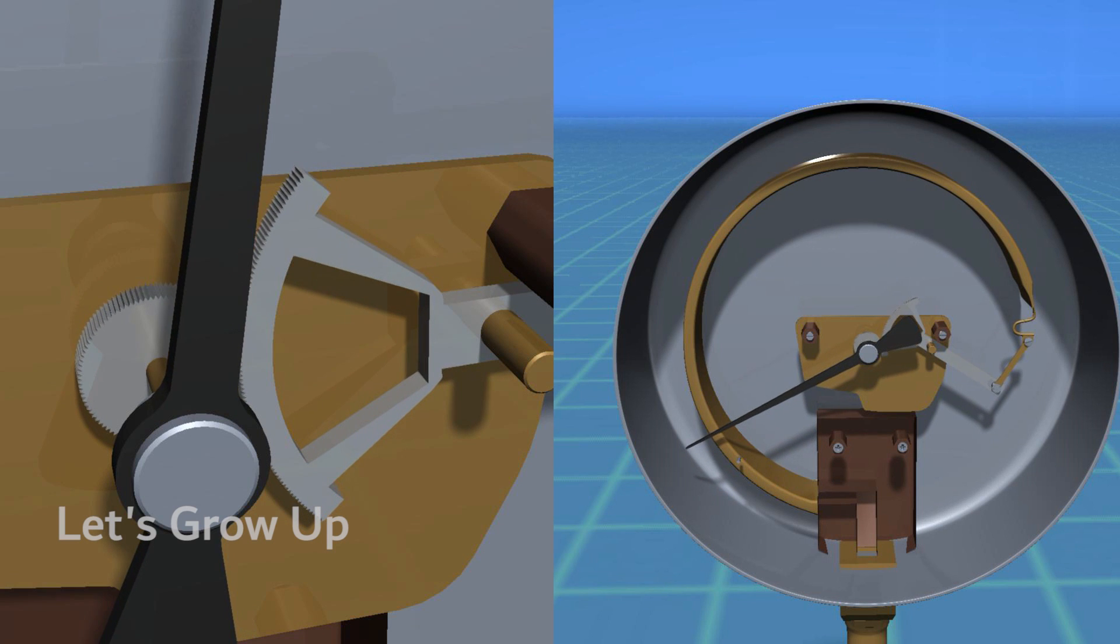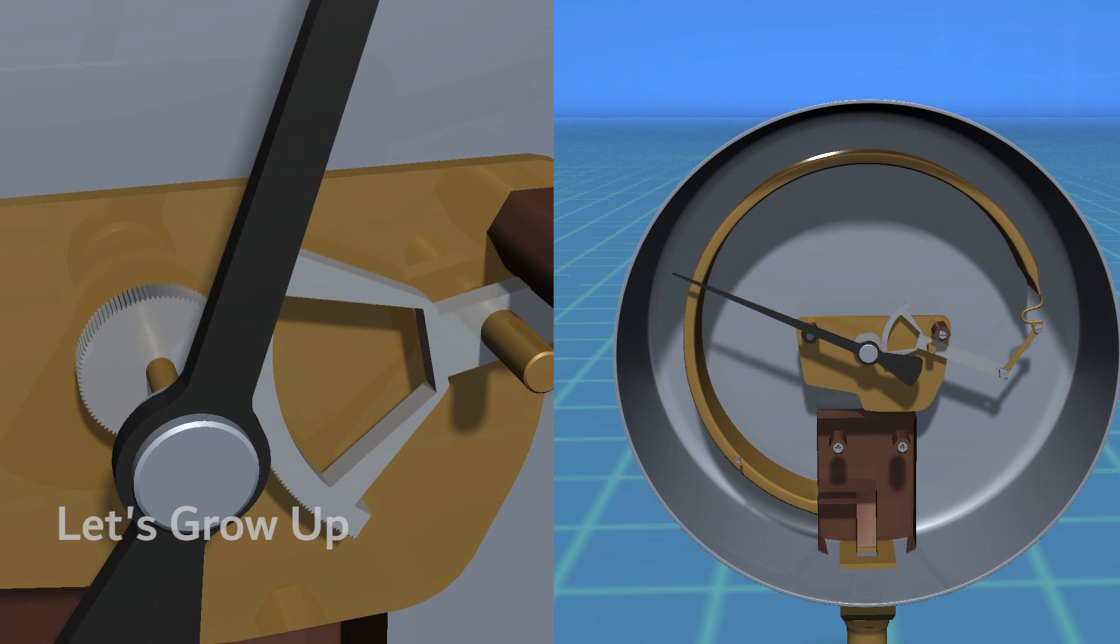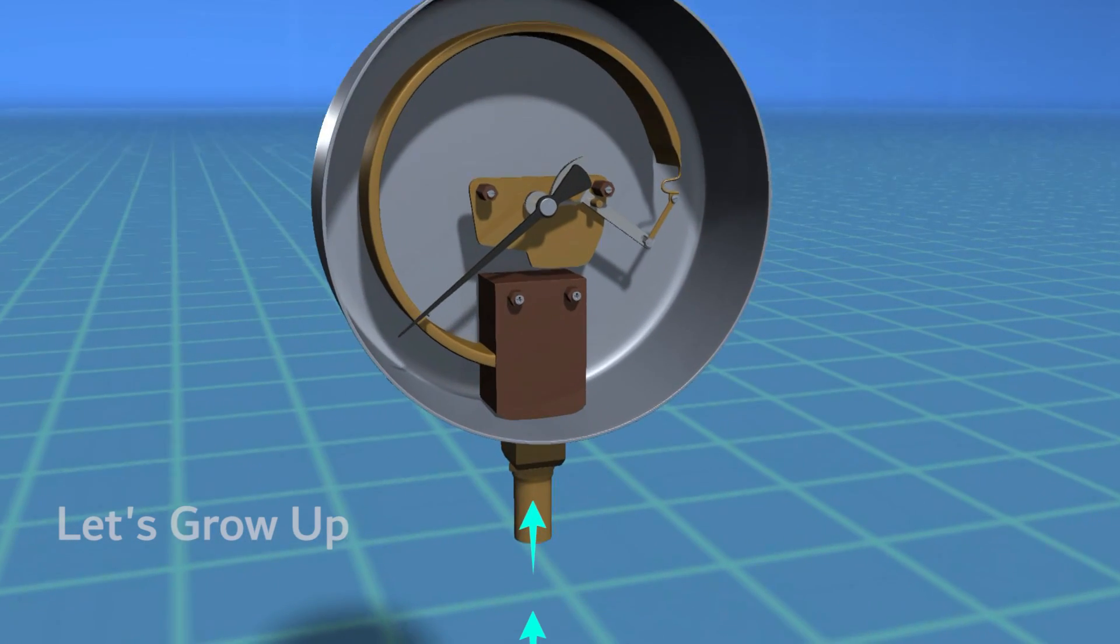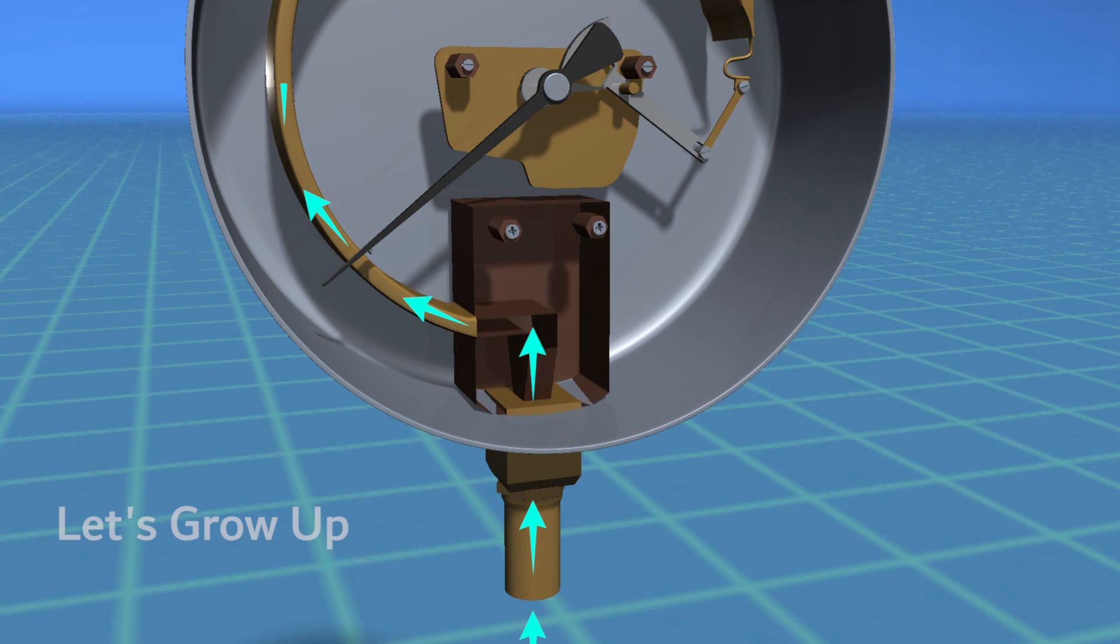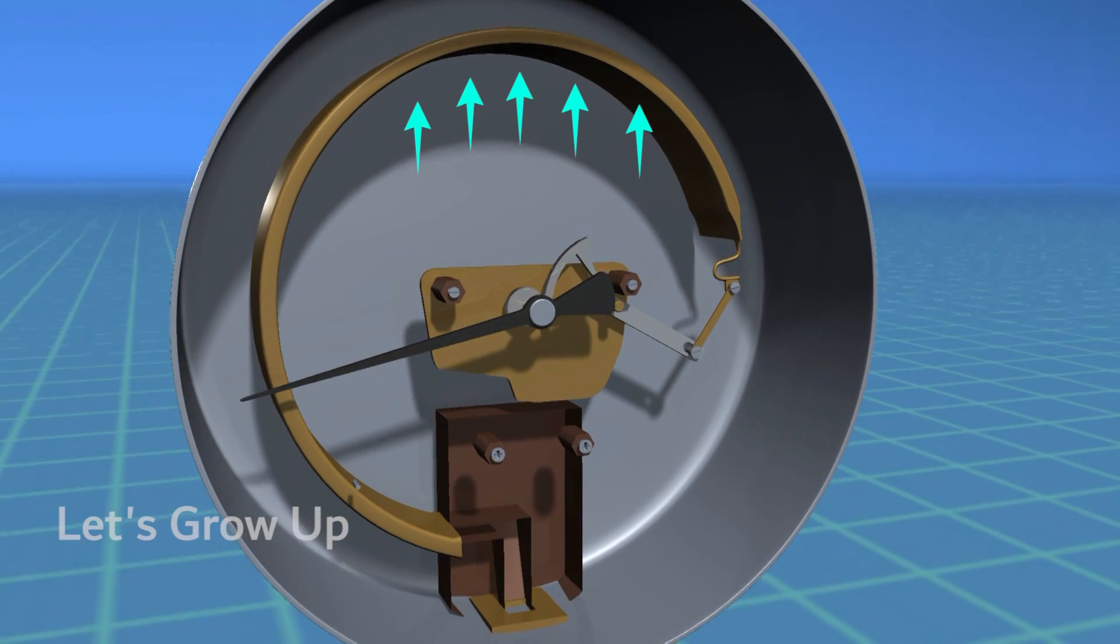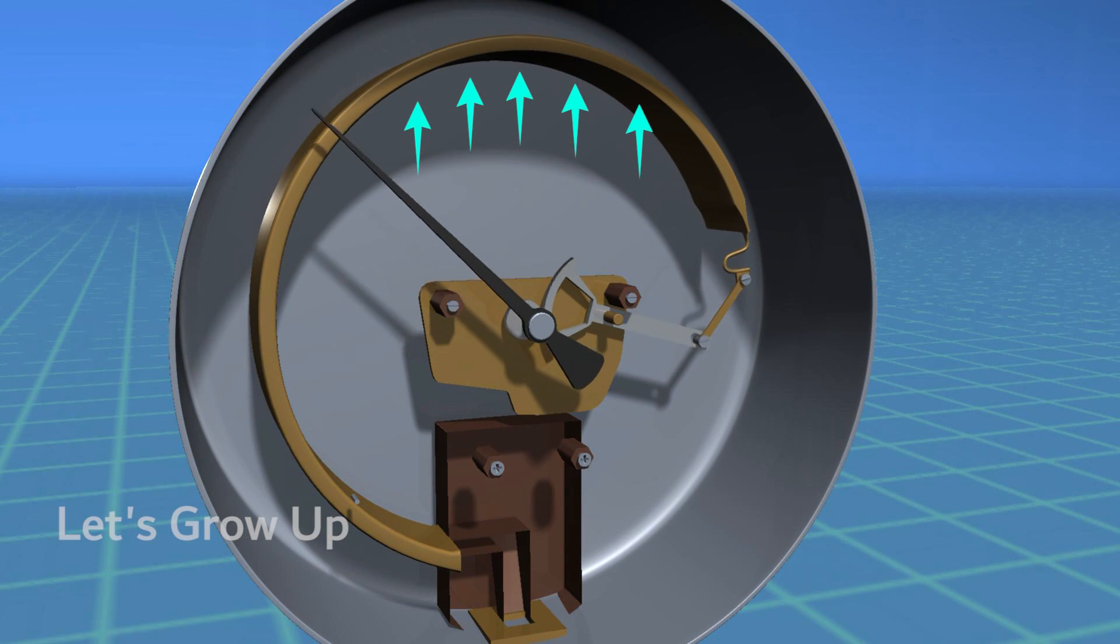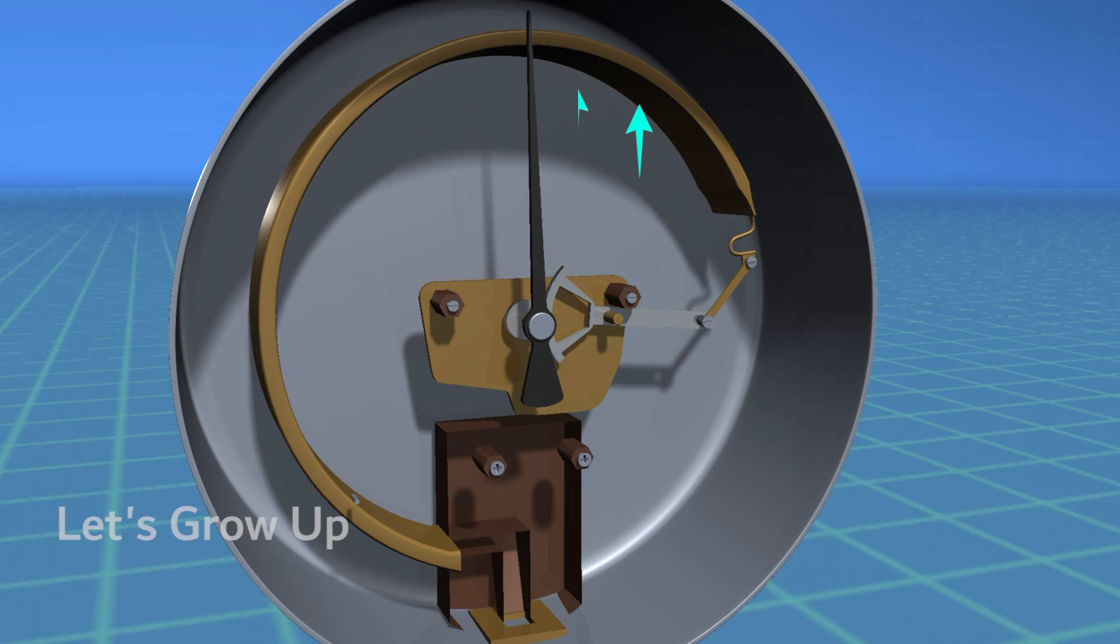Let's see how it works. When air pressure is applied to the inside of the Borden tube, it causes the tube to straighten or elongate. This change in shape is proportional to the pressure exerted on the inside of the tube.